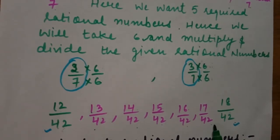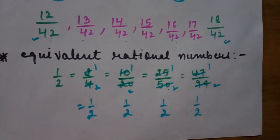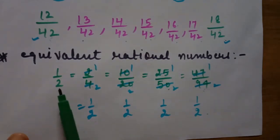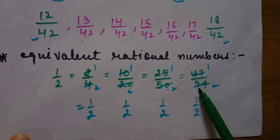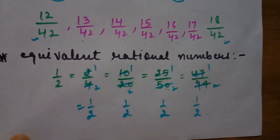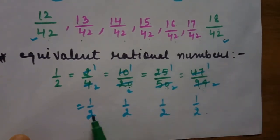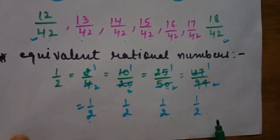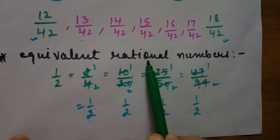If we want more rational numbers, we change this multiplier according to the question. Next topic is equivalent rational numbers. Equivalent rational numbers are those numbers whose standard fraction is equal to each other. For example, 1 upon 2, 2 upon 4, 10 upon 20, 25 upon 50, and 47 upon 94 are all equivalent rational numbers. When we simplify them by cancellation, they all reduce to 1 upon 2. Standard form means after cancellation there is no further scope of cancellation, and all these fractions are equal.